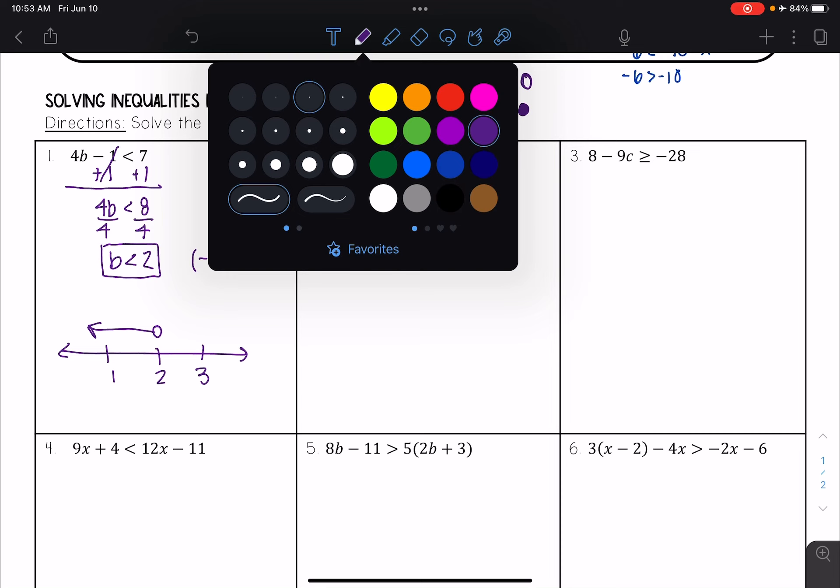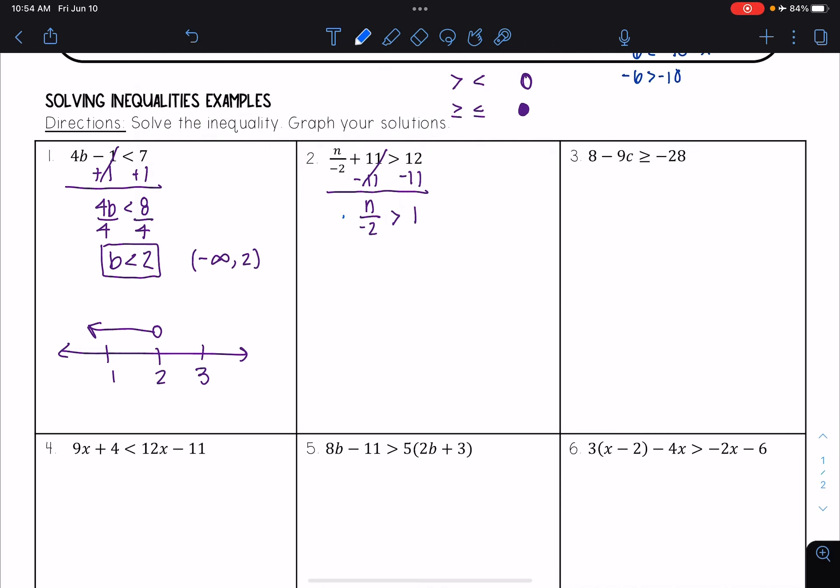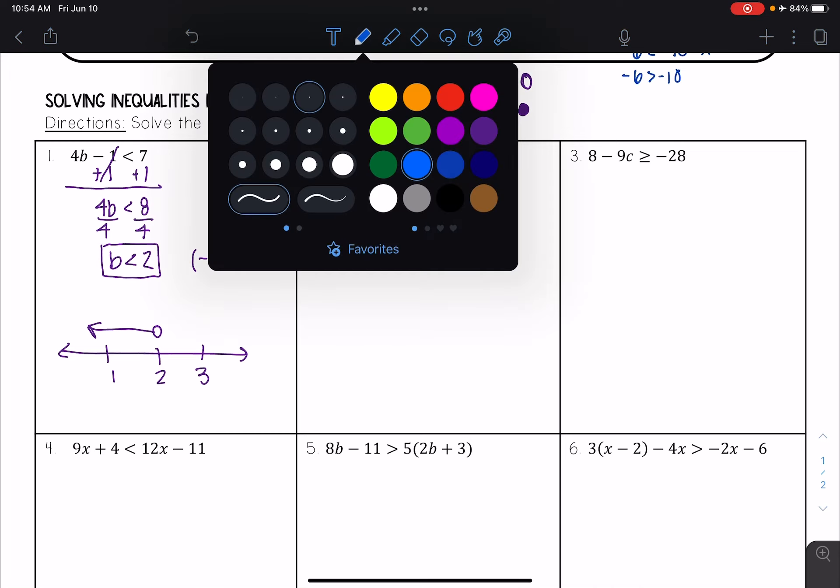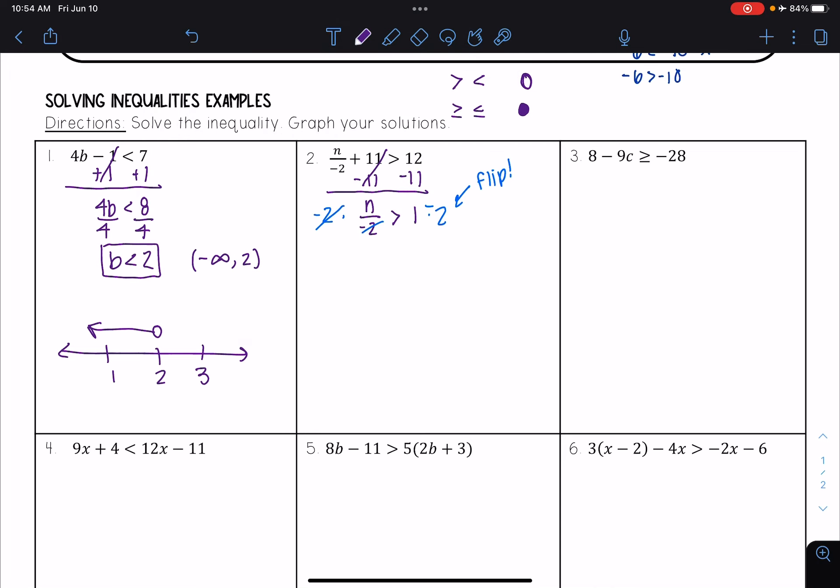And then I need to multiply both sides by negative 2. And now here is where we need to be careful. I am multiplying both sides by negative 2. So that means I need to flip my inequality. And so when I do that, I get that n is now less than negative 2.